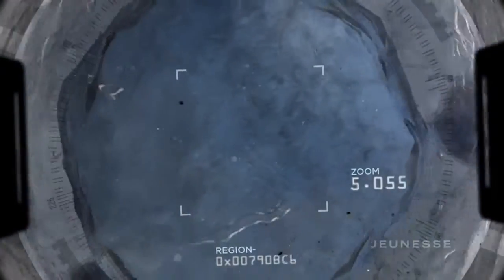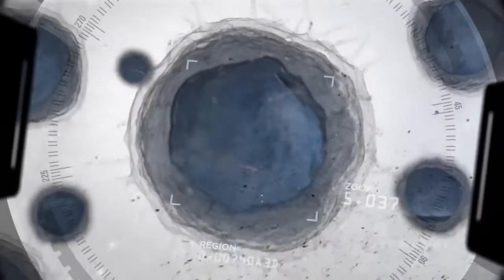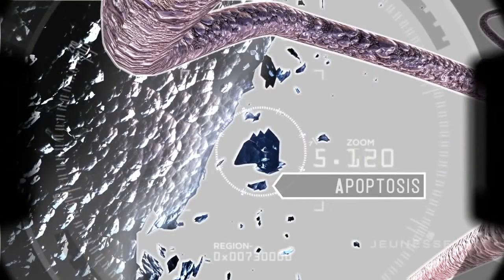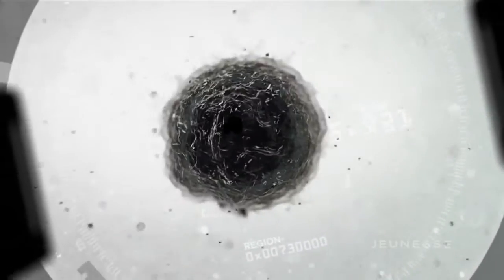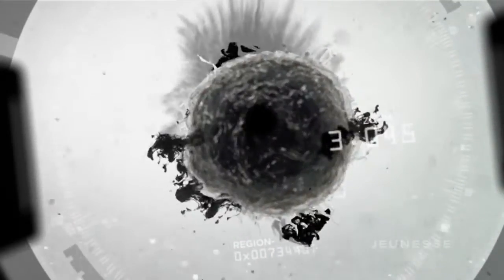When telomeres become too short, our cells can no longer carry out their critical functions. Cells start to self-destruct and eventually die. Scientists call this apoptosis. Cells dying is one thing, but when cells simply stop functioning, they can spew out dangerous free radicals and inflammatory molecules that essentially damage nearby cells.